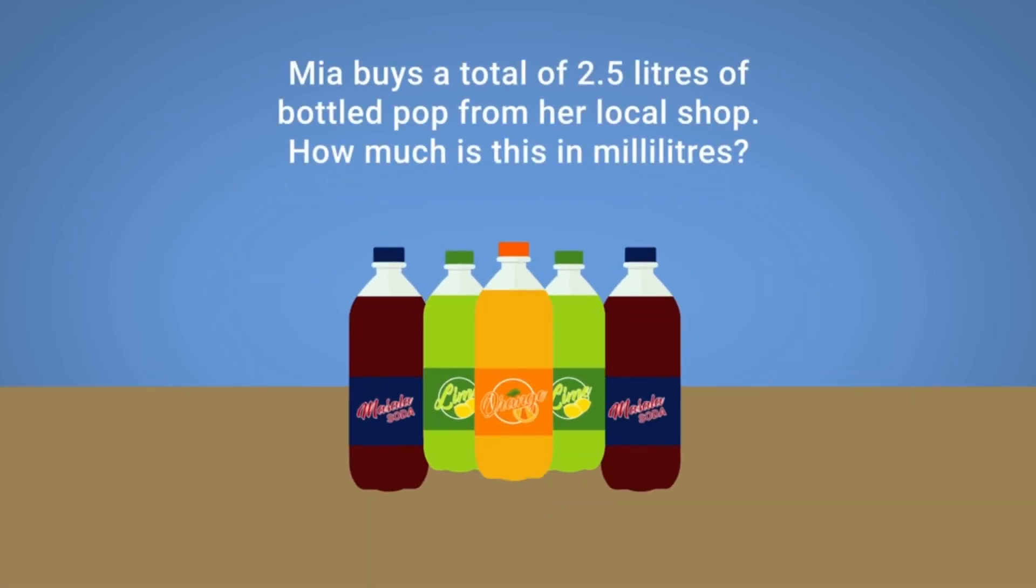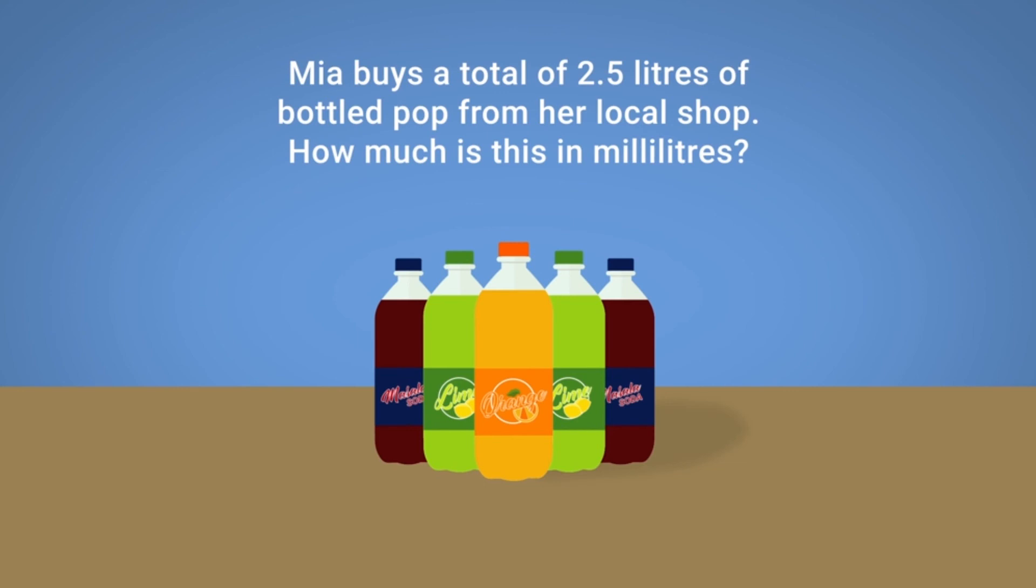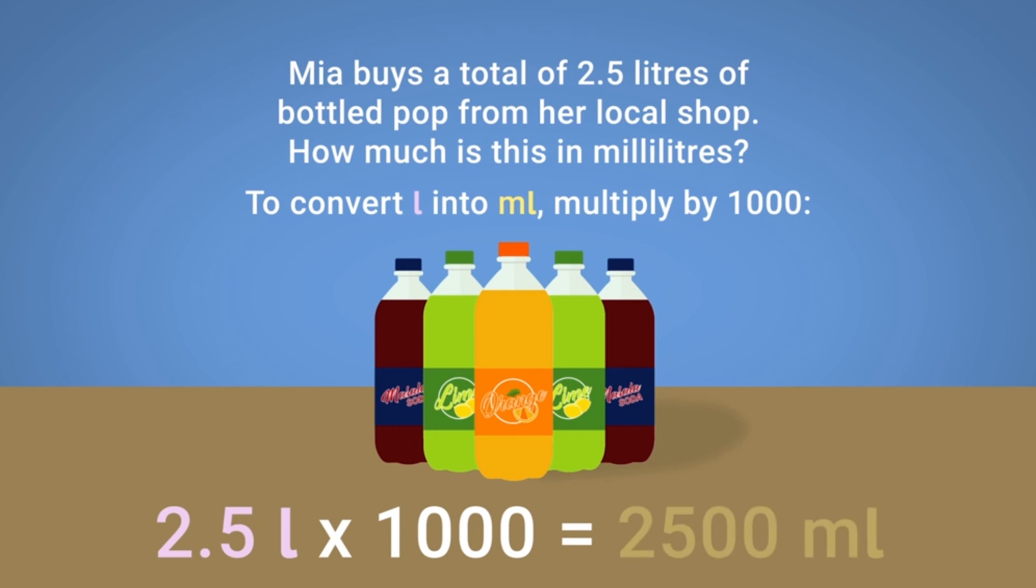Mia buys a total of 2.5 litres of bottled pop from her local shop. How much is this in millilitres? To convert litres into millilitres multiply by 1000. 2.5 litres multiplied by 1000 equals 2,500 millilitres.